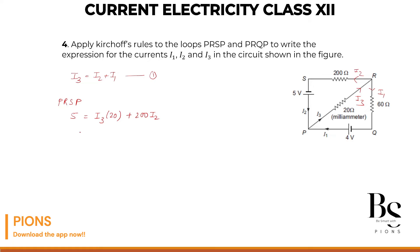Now I3 is nothing but I2 plus I1. So 20 into I2 plus I1 plus 200 I2. Let's simplify it further. So 5 will be equals to 20 I2 plus 220 I2. This is our equation number 2.